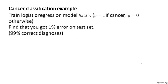Consider the problem of cancer classification, where we have features of medical patients and we want to decide whether or not they have cancer. This is like the malignant versus benign tumor classification example we had earlier. So let's say y equals 1 if the patient has cancer and y equals 0 if they do not. We might train a logistic regression classifier, and let's say we test it on a test set and find that we get 1% error — 99% correct diagnoses.